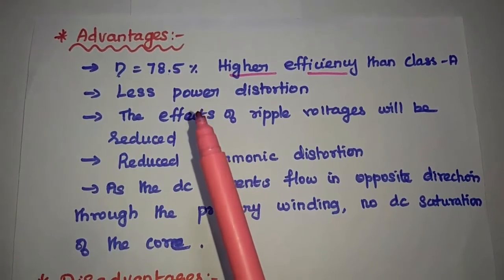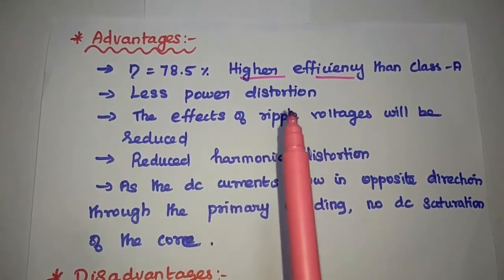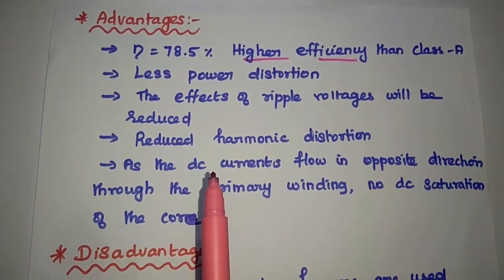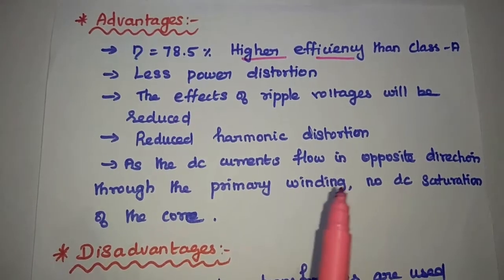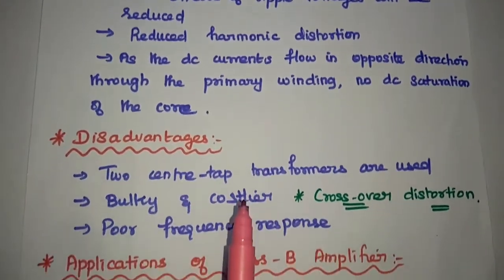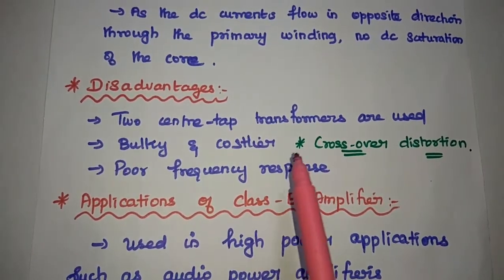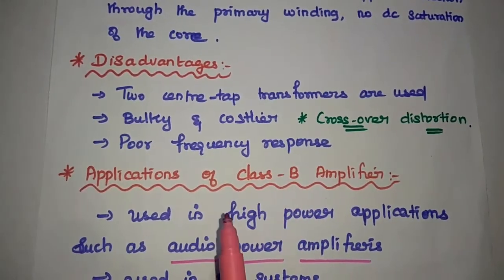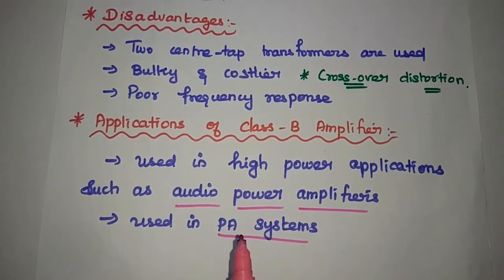Advantages of the class B amplifier: it has higher efficiency than the class A amplifier, less power distortion, and the effects of ripple voltages are reduced using the center-tap transformer. There is reduced harmonic distortion, and since DC currents flow in opposite directions through the primary winding, there is no possibility of DC saturation of the core. Disadvantages: two center-tap transformers are required, making the circuit bulky and costly; it also produces crossover distortion and has poor frequency response. Applications: it is widely used in high-power applications such as audio power amplifiers and PA systems.